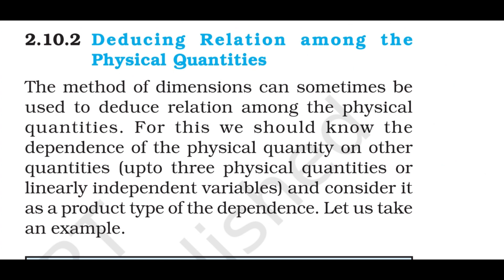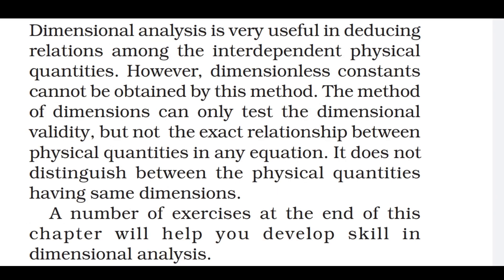Deducing Relations Among Physical Quantities: The method of dimensions can sometimes be used to deduce relations among physical quantities. For this, we should know the dependence of the physical quantity on other quantities (up to three physical quantities or linearly independent variables) and consider it as a product-type dependence. However, dimensionless constants cannot be obtained by this method. The method of dimensions can only test dimensional validity, not the exact relationship between physical quantities, and it does not distinguish between physical quantities having the same dimensions.